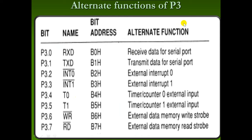Alternate functions of Port 3: Port 3.0 can be used as a serial receiver (RXD, bit address B0H). Port 3.1 is the serial transmitter (TXD). Port 3.2 is External Interrupt 0, Port 3.3 is External Interrupt 1. Port 3.4 is Timer/Counter 0 external input, Port 3.5 is Timer/Counter 1 external input. Port 3.6 is Read bar and Port 3.7 is Write bar.